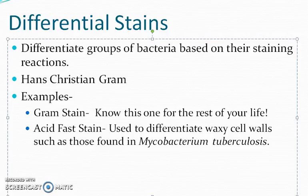There are quite a few other differential stains. An acid-fast stain is used to differentiate organisms like Mycobacterium tuberculosis. That organism has a waxy coat, which makes it very difficult to stain, and it will give you some really weird results with a gram stain — they typically stain gram-positive, but they can be a little different.